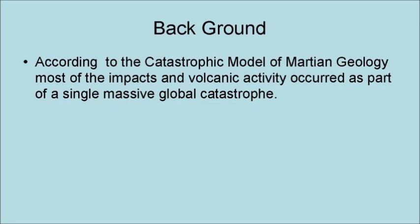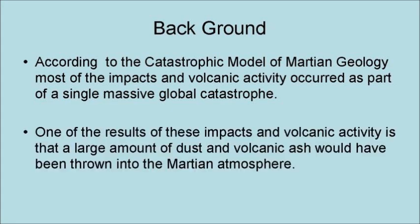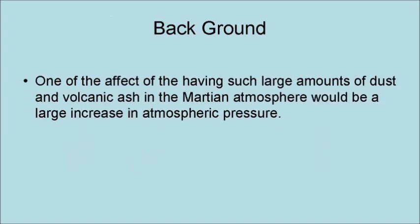According to the catastrophic model of Martian geology, most of the impacts and volcanic activities on Mars occurred as part of a single massive global catastrophe. One of the results of these impacts and volcanic activities is that a large amount of dust and volcanic ash would have been thrown into the Martian atmosphere, causing a large increase in atmospheric pressure.